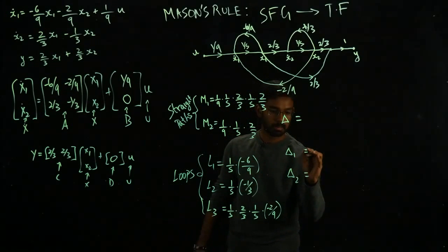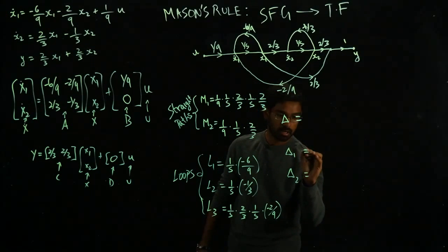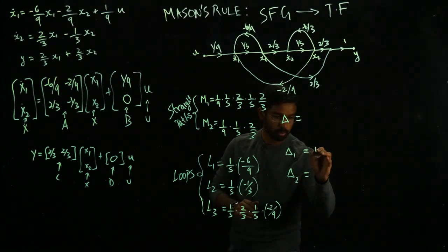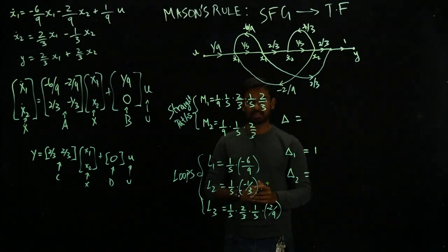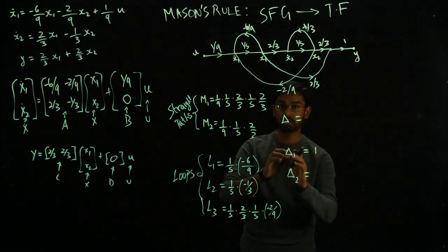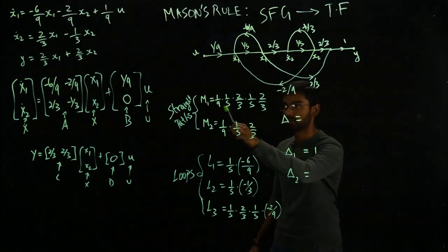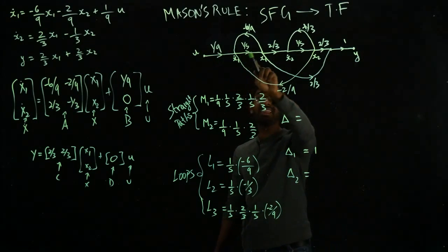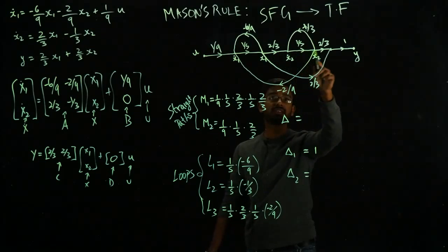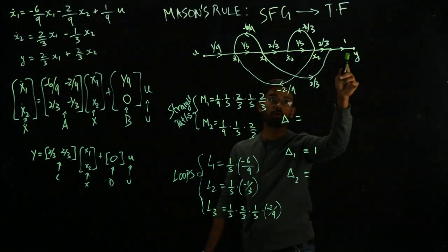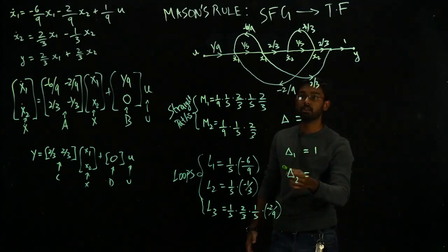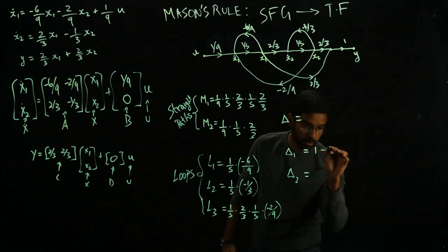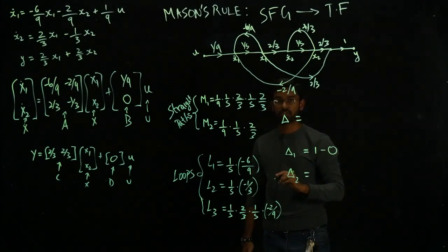So now in terms of delta 1 and delta 2, they are really straightforward. You start off with 1 and then you look at basically the loops that are not touching the forward path. So delta 1 corresponds to M1. M1, as I said, is a straight line. So is there any loop out of these three loops that's not touching the forward path? The answer is no. You don't have any loops that are not touching the forward path. Everything is touching the forward path. So you cannot subtract anything out.